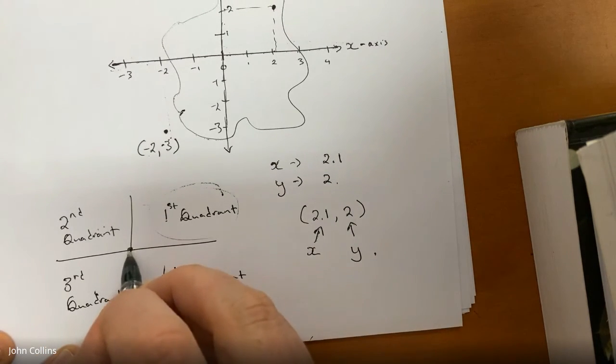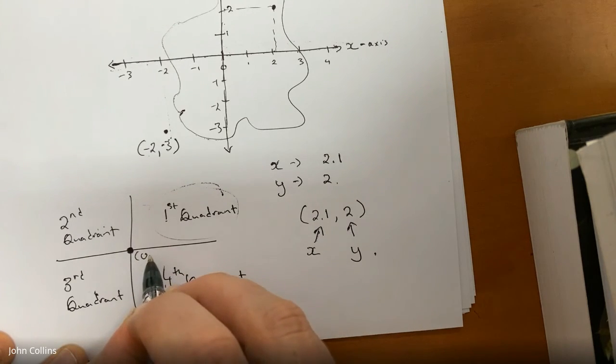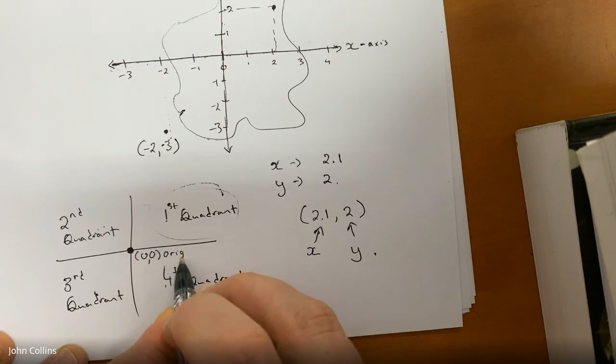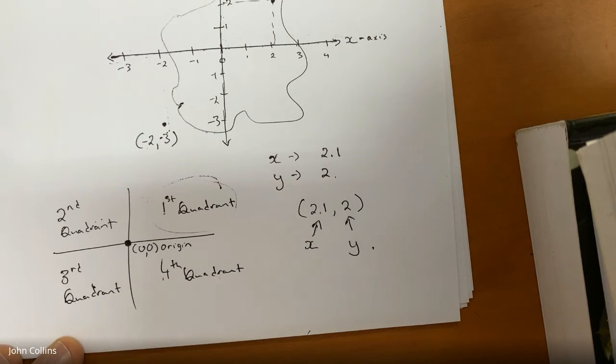The point where they meet in the middle has a very special coordinate. Its coordinate is zero and x, and zero and y. It is the origin. It is the origin of all numbers, perhaps. But maybe not. It is (0, 0). It's a special number. It's the origin.